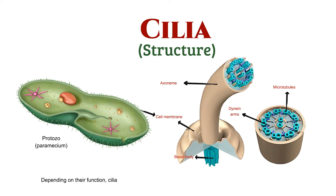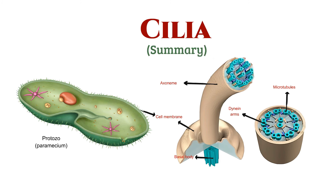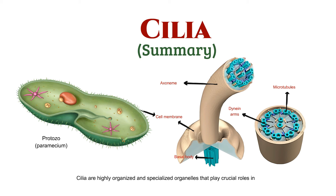Depending on their function, cilia may contain additional structures such as sensory receptors or specialized proteins. Cilia are highly organized and specialized organelles that play crucial roles in various biological processes, from cellular movement to sensory perception.